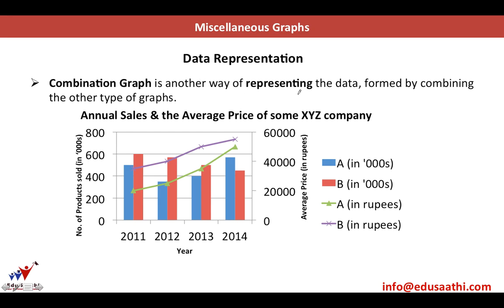A combination graph is another way of representing data formed by combining other types of graphs. Here we have annual sales and the average sale price of some XYZ company. The Y axis shows the number of products sold in thousands — 200,000, 400,000, 600,000, and 800,000. The X axis shows the different years: 2011, 12, 13, and 14. On the right side of this Y axis, we have the average price in rupees: 20,000, 40,000, and 60,000.